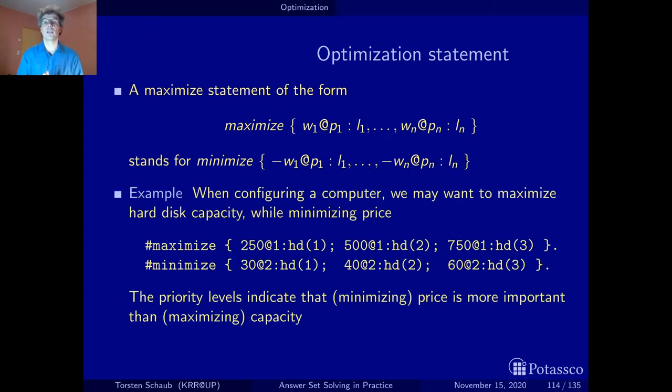So here's an example how we can use optimization statements to this end. So here the idea is to talk about hard disks. So whenever I have this predicate HD here I talk about hard disks. There are three of them, one two three, and the idea is I want to maximize the capacity of the hard disk while minimizing the price. So hard disk one has a capacity of 250, hard disk two of 500, three of 750, and accordingly hard disk one only costs 30 bucks, hard disk two 40, and hard disk three 60.